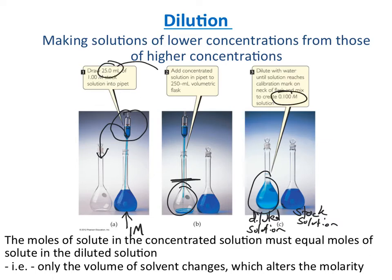We took 25 milliliters into a 250 milliliters total, which means we diluted by 10 fold. So we went from 1 molar to 0.1 molar.